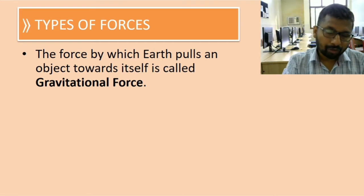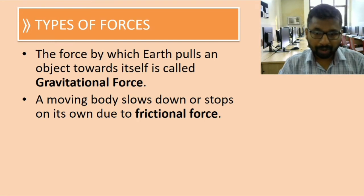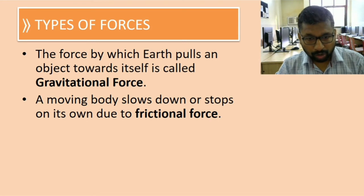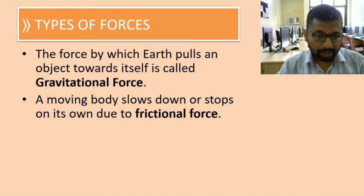A moving body slows down or stops on its own due to frictional force. For example, if you throw a ball onto the ground, it will slow down and then stop. This happens because of the frictional force exerted by the rough surface. If the surface is very smooth, the frictional force will be less. If it is rough, it will be more.